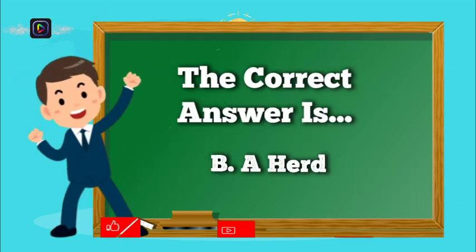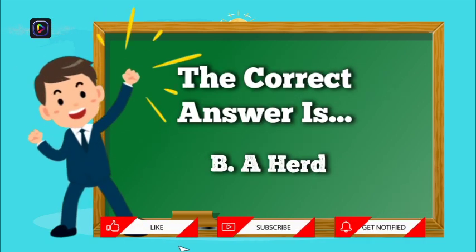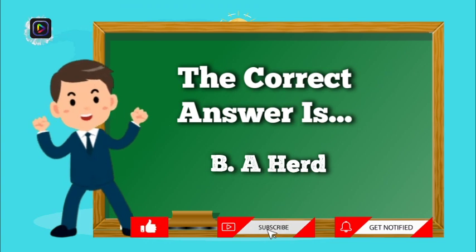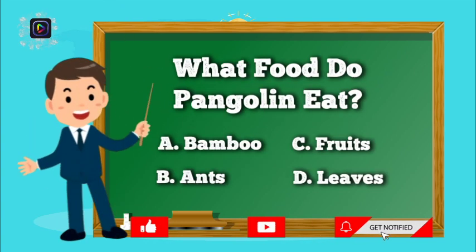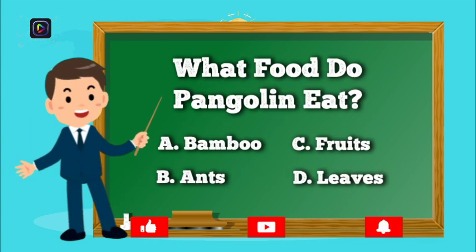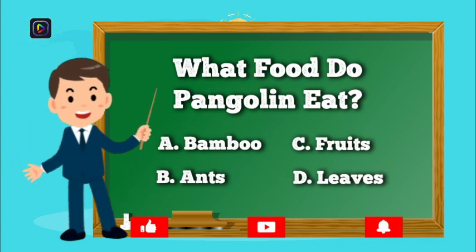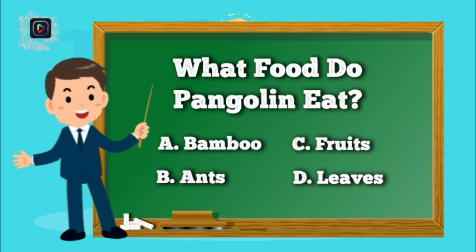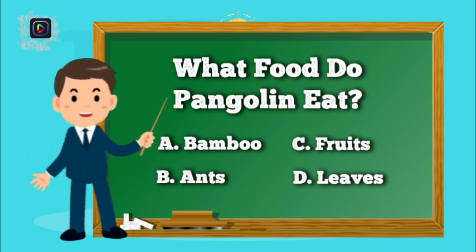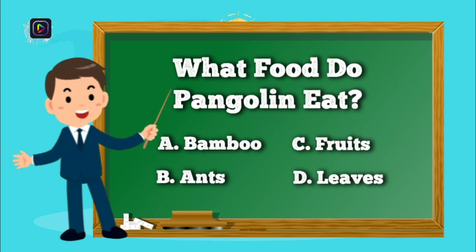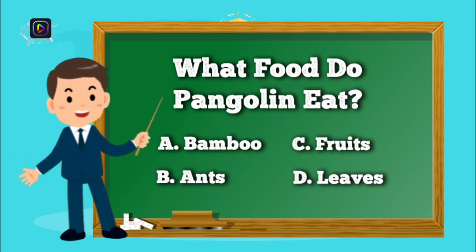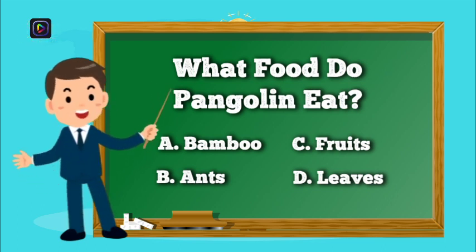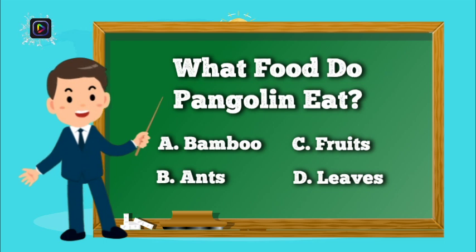The correct answer is B, A Herd. Question number 8. What food do pangolins eat? Is it A, Bamboo? B, Ants? C, Fruits? Or D, Leaves?